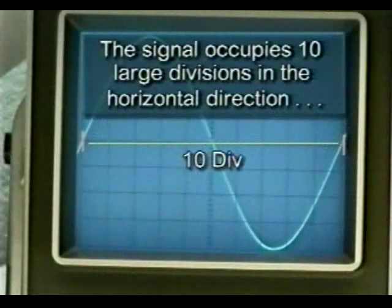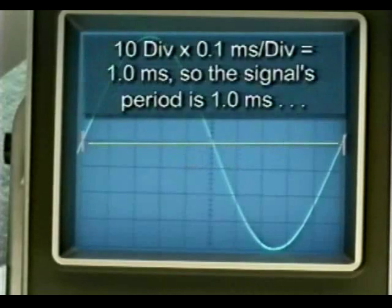Our sine wave occupies 10 large divisions horizontally. 10 divisions multiplied by 0.1 milliseconds per division equals 1 millisecond, so the signal's period is 1 millisecond. This means it takes 1 millisecond for the sine wave to complete one cycle.